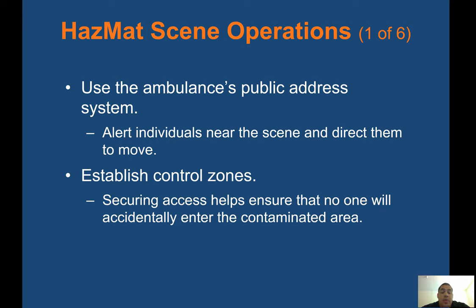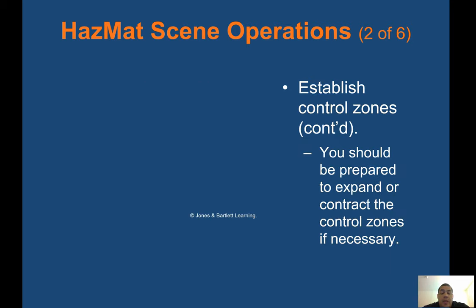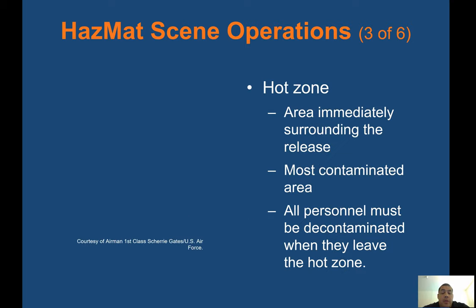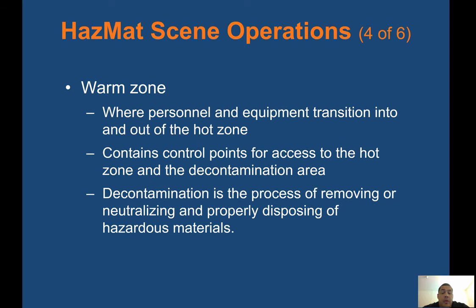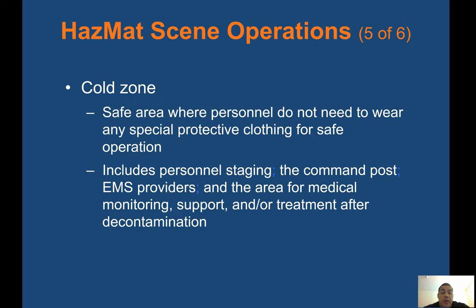HAZMAT scene operations: use the ambulance's public address system to alert individuals near the scene and direct them to move. Establish control zones — securing access ensures no one accidentally enters the contaminated area. The hot zone is the area immediately surrounding the release — the most contaminated area — and all personnel must be decontaminated when leaving. The warm zone is where personnel and equipment transition into and out of the hot zone, and contains the decontamination area. Decontamination removes or neutralizes hazardous materials. The cold zone is a safe area where no special protective clothing is needed — it includes personnel staging, the command post, EMS providers, and the area for medical monitoring, support, and treatment after decontamination.